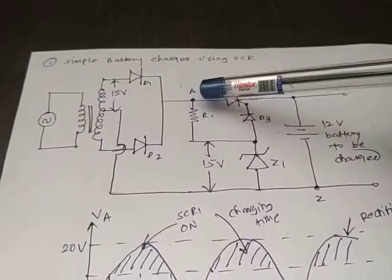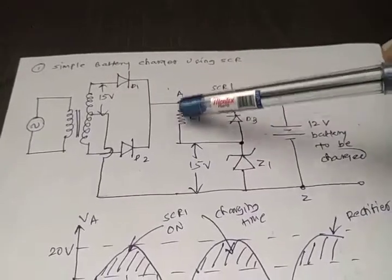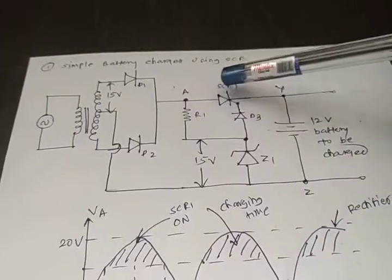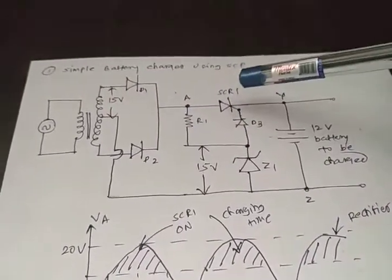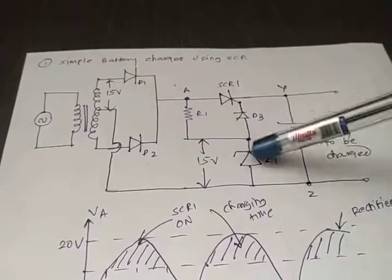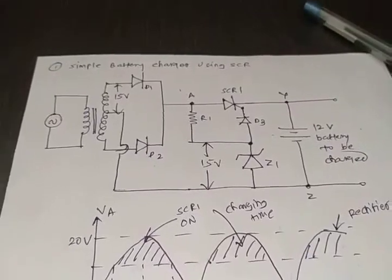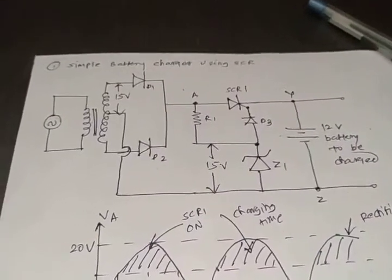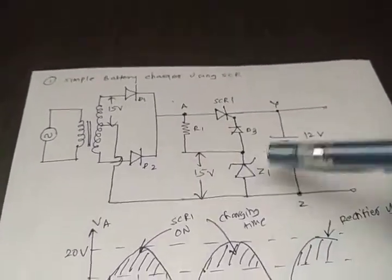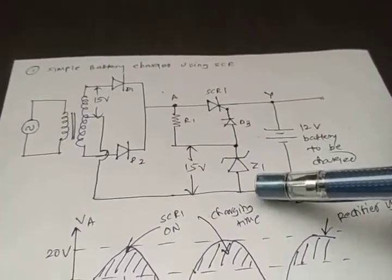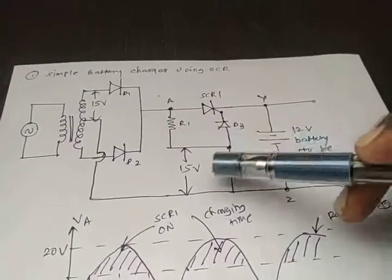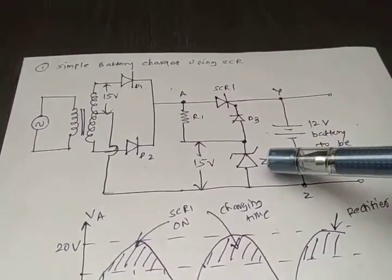The voltage comes across to point A, and then this voltage is transferred through a resistor across the Zener diode, and the same voltage is provided to the SCR. The purpose of the Zener diode is to maintain the 15 volts — it acts as a regulator, because the property of the Zener diode is to provide a constant amount of voltage. So we use the Zener diode to provide a constant voltage across the SCR.